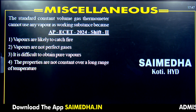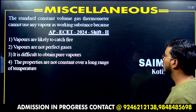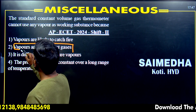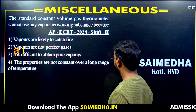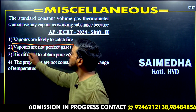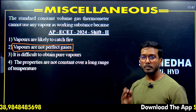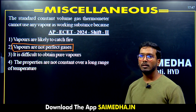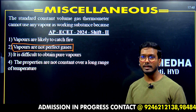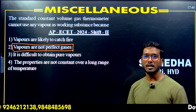The final question: a constant volume gas thermometer cannot use any vapor as working substance because vapors are not perfect gases. This thermometer is valid only for perfect gases, and since vapors are not perfect gases, they cannot be used. That concludes all the important miscellaneous questions. Make sure to utilize these videos and practice well. I'll come back tomorrow with one more video — keep learning with saimetha.in and subscribe to the channel for every update from Sai Meda Hyderabad.